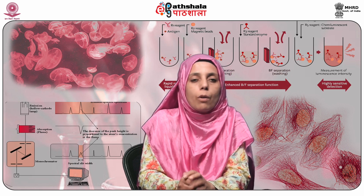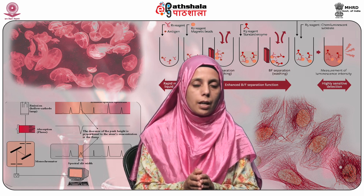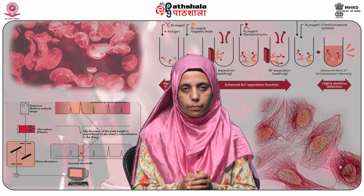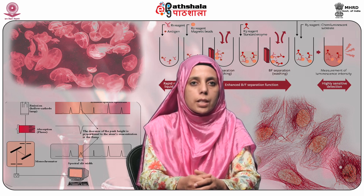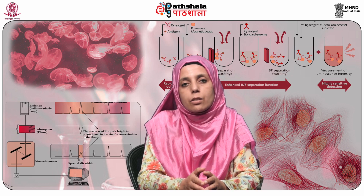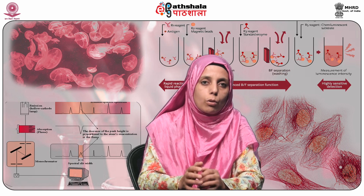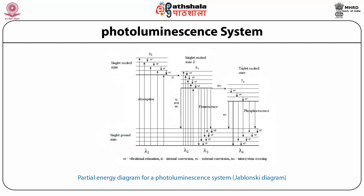Fluorescence occurs in simple as well as complex gaseous, liquid, or solid chemical systems. The simplest example is vaporized sodium atoms where 3s electrons are excited to 3p by absorption of wavelengths 5896 and 5890 angstroms. After 10 to the power minus 5 to 10 to the power minus 8 seconds, these excited electrons return to ground state emitting radiation of the same two wavelengths — this is called resonance fluorescence. The ratio of the number of molecules that luminesce to the total number of excited molecules is the quantum yield; for highly fluorescent molecules such as fluorescein, the ratio approaches unity. This can be seen in the partial energy diagram for a photoluminescent system, known as the Jablonski diagram, named after the Swedish scientist Jablonski.